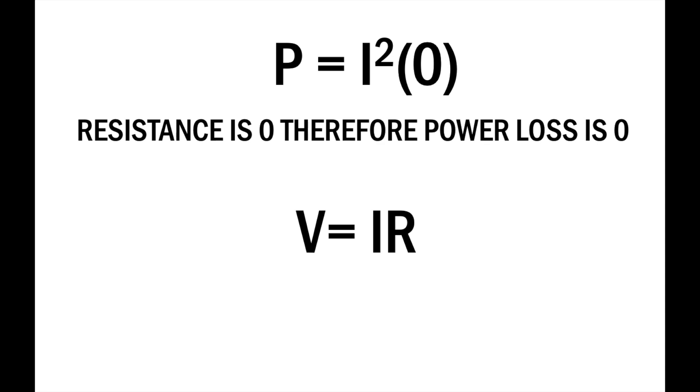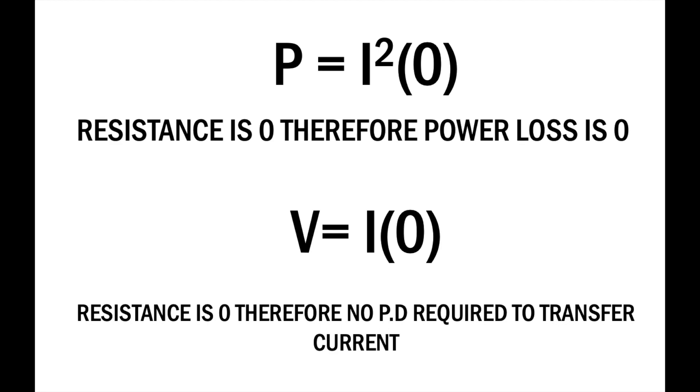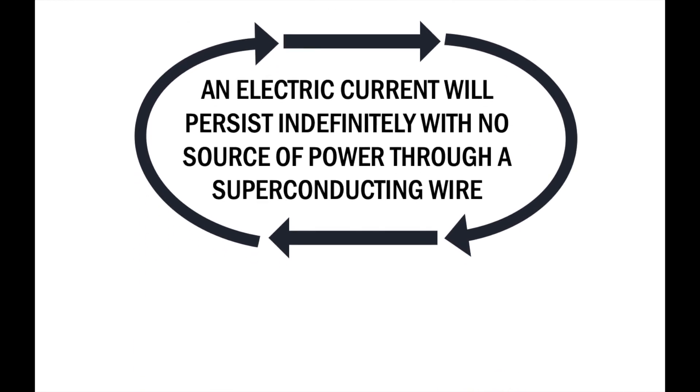Looking at Ohm's law, with zero resistance, no potential difference is required to carry a current. This therefore means a current will flow indefinitely once set in motion, making it one of the closest things to perpetual motion in nature.